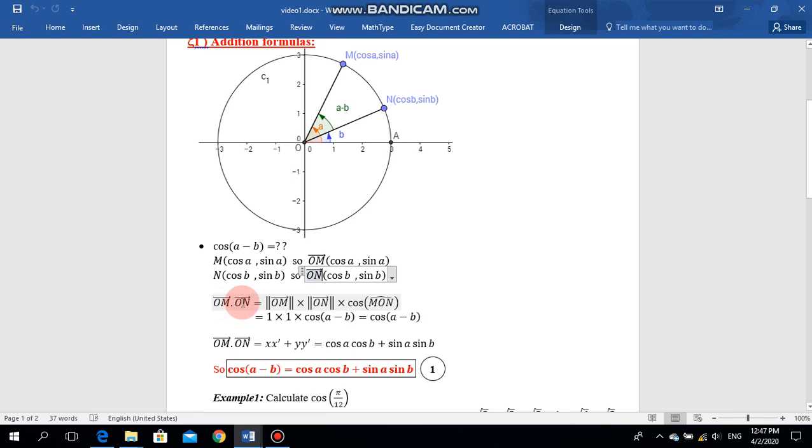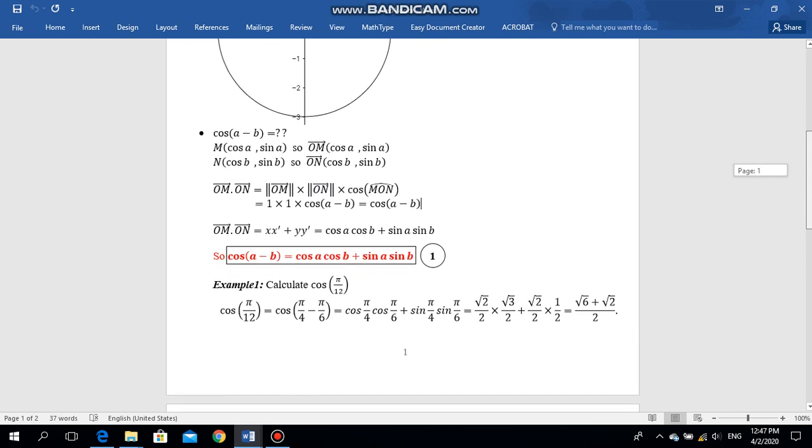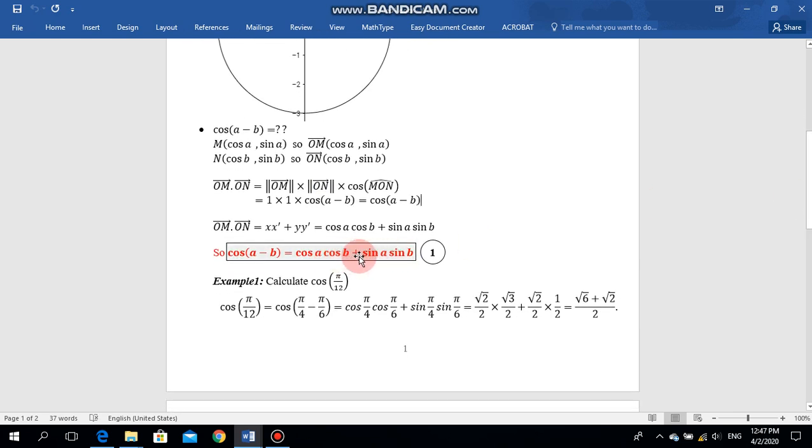The first formula for the dot product is the magnitude of the vector OM multiplied by the magnitude of the vector ON multiplied by cosine the angle, which equals 1 times 1 times cosine the angle MON, which we already said is the angle A minus B. Another formula is xx' plus yy', which equals cosine A cosine B plus sine A sine B. So we get the formula: cosine (A minus B) equals cosine A cosine B plus sine A sine B.